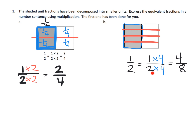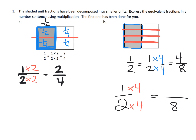Why does this make sense? When we started with one half, we took each of those halves and cut each of them into four pieces, giving us eight pieces total. And that one piece that was shaded also got cut into four pieces, so now we have four pieces shaded out of eight. That's why this standard algorithm makes sense — the picture is helping us recognize that relationship.